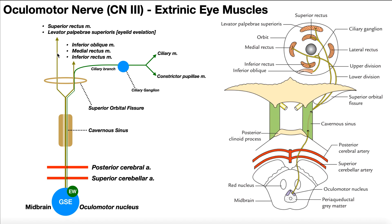The upper division is going to go into the orbit and ultimately control two muscles. The first one is an extrinsic eye muscle — the superior rectus muscle, which elevates the eye and turns it a little bit medially. The other one is not an extrinsic eye muscle because it does not move the eyeball, but it is in that area. It's called the levator palpebrae superioris, and this one is involved in elevating the eyelid — opening the eyelid is controlled by this muscle.